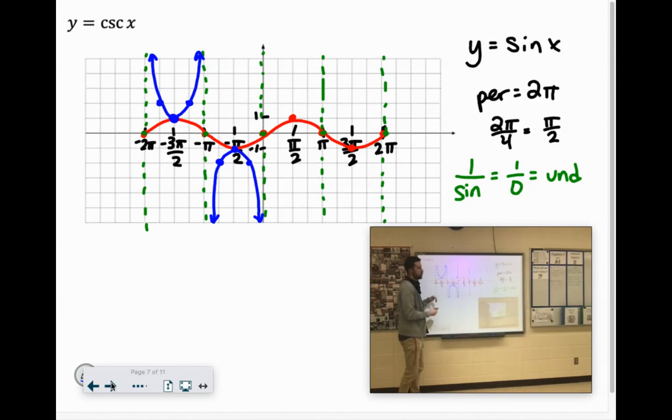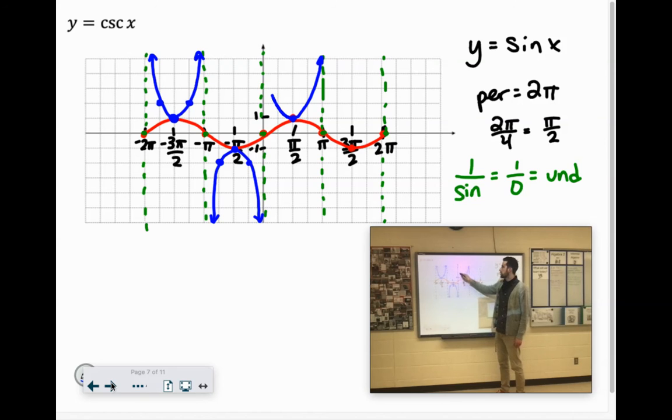And remember, these points correspond with the unit circle. The cosecant of π over 2 is going to come out to 1. And as we get closer to π, it's going to increase there. As we get closer to 0, it starts to increase exponentially.